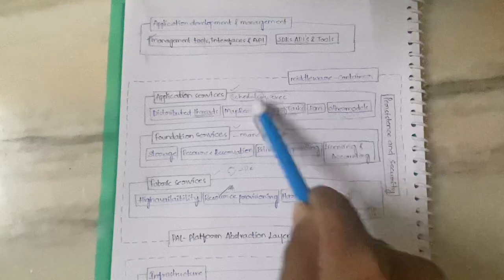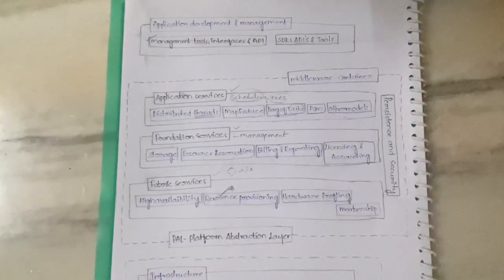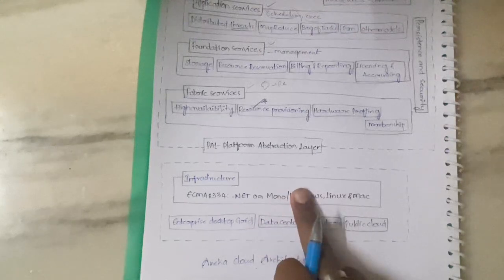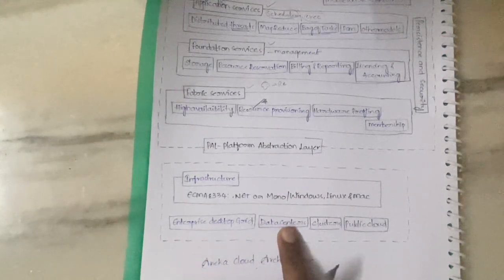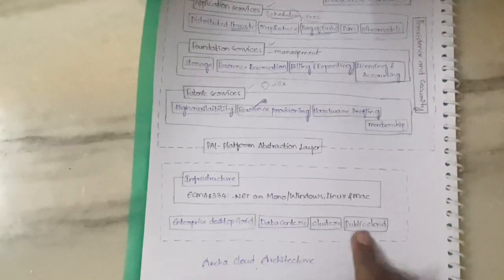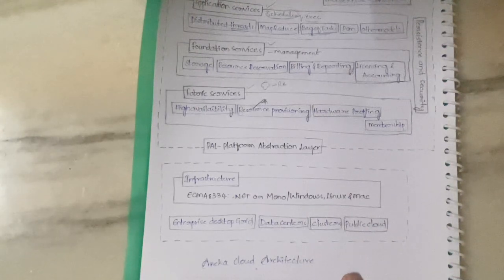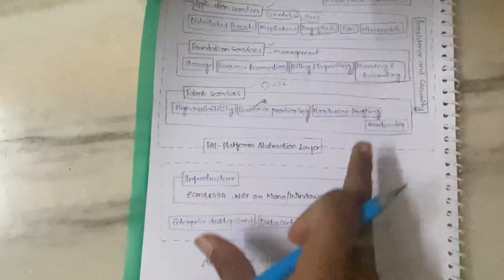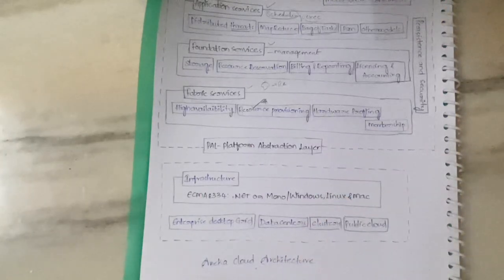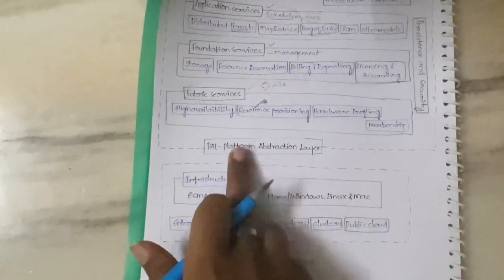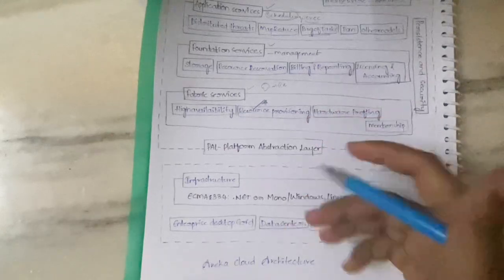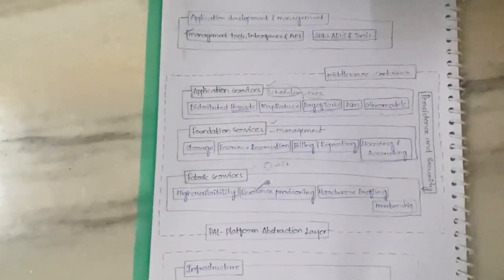Below the three services you have the Platform Abstraction Layer (PAL), and below that you have the infrastructure — Enterprise Desktop, Grid, Data Centers, Clusters, and Public Clouds such as AWS and Microsoft Azure. The interaction between the services and the physical infrastructure is possible because of this PAL. The Platform Abstraction Layer enables you to communicate with the node. This is all about the Aneka cloud architecture.